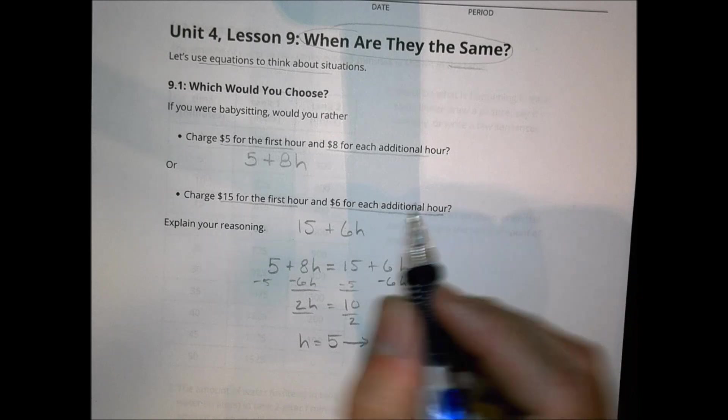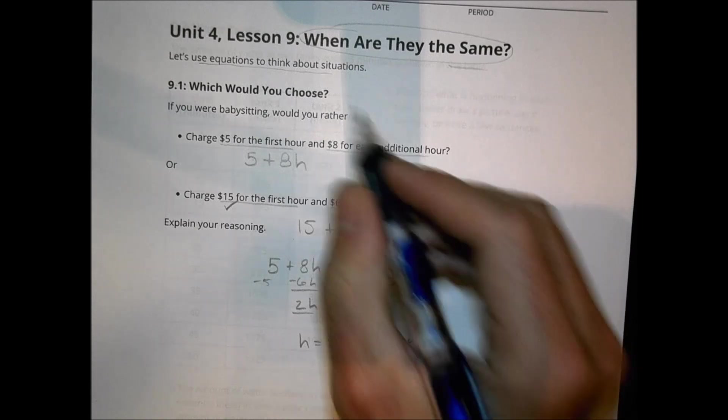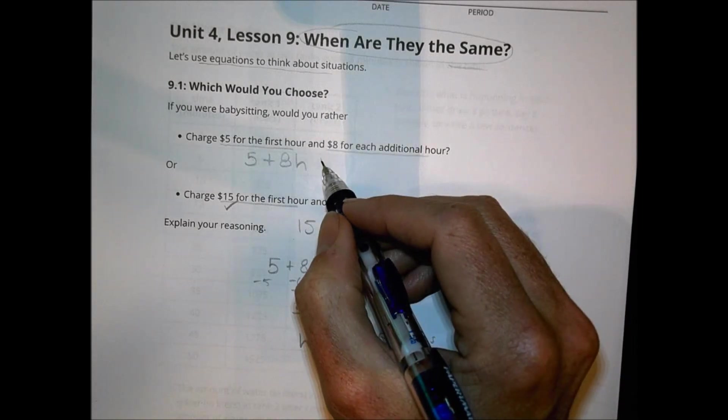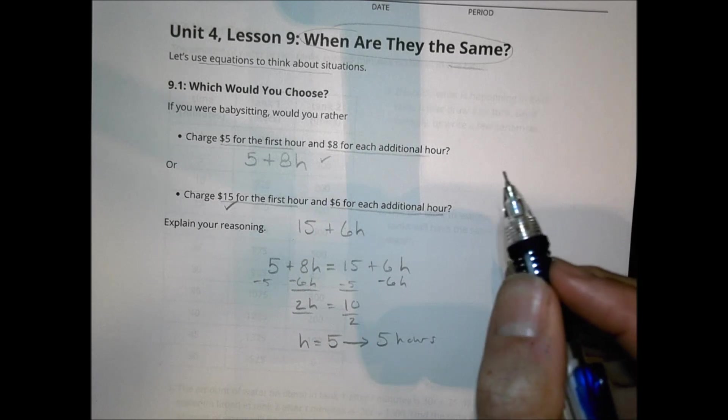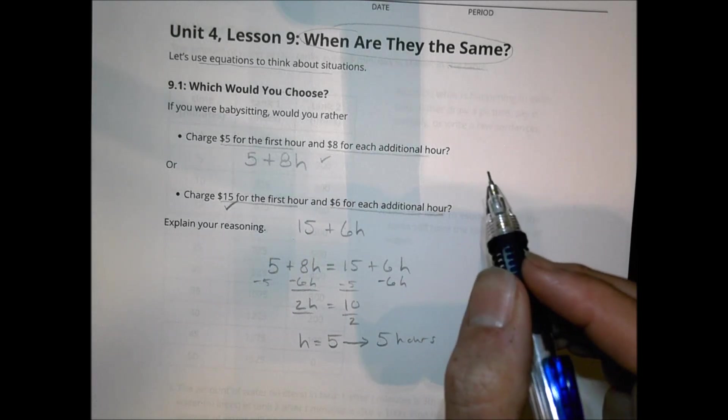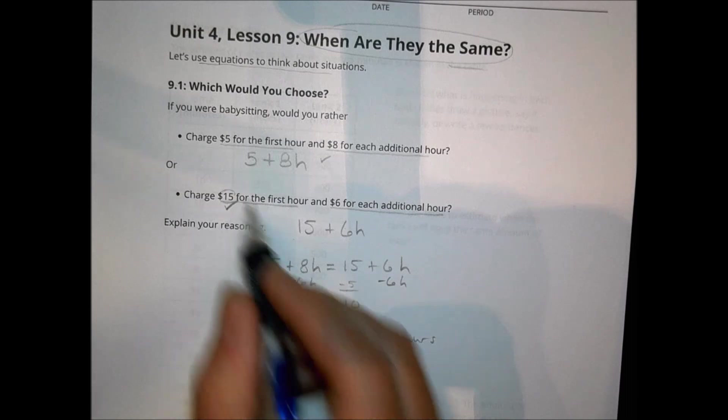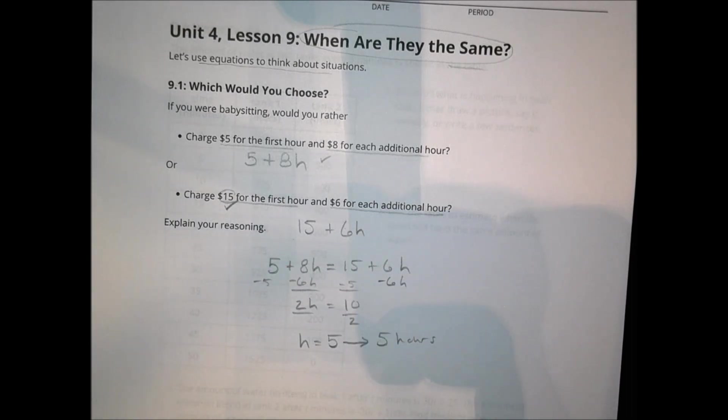Before the 5 hours though, the $15 person is going to have a little bit more because they started with some more. But once you go over 5 hours, then the first person over here who makes $8 an hour will start to earn more than the second person. So it really depends on how long you're going to work. If you're going to work for less than 5 hours, then you probably want to go with a $15 charge.